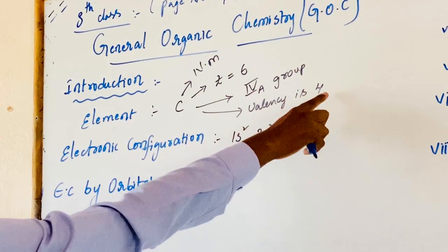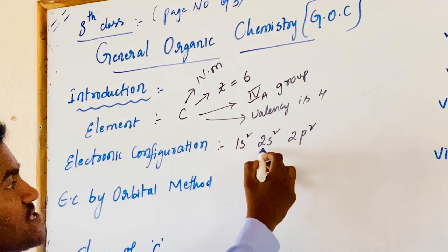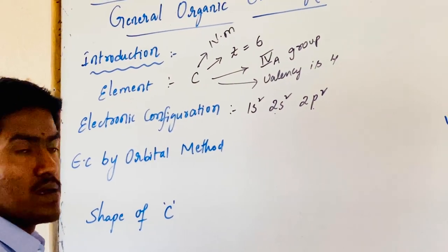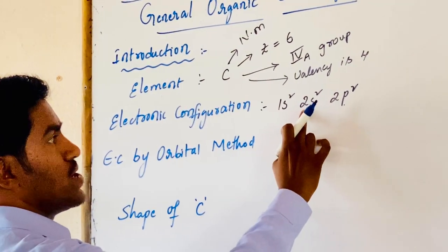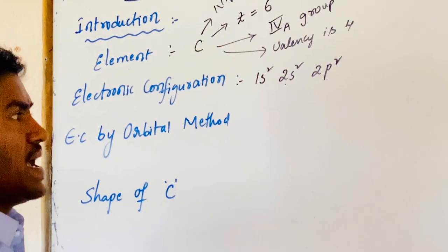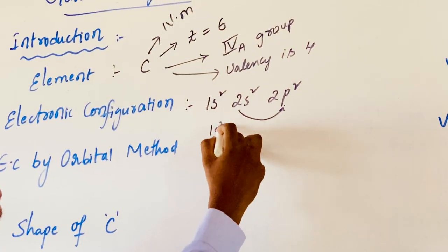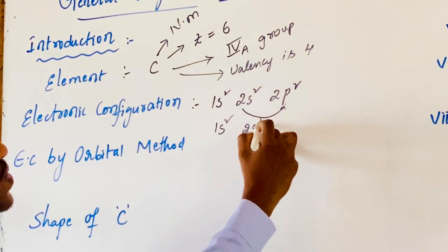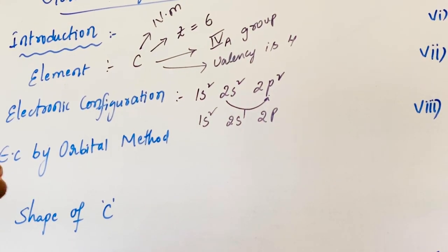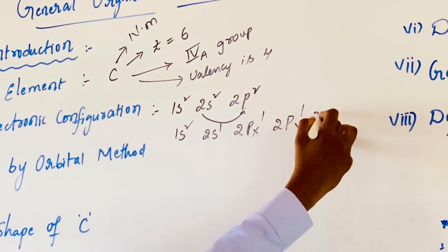Hence the valency of carbon is 4. An electron may transfer from 2s1 to 2p by gaining some energy. So the excited state configuration becomes 1s2, 2s1, 2p3. The 2p3 can be written as 2px1, 2py1, 2pz1.